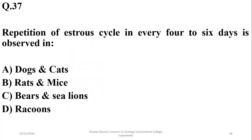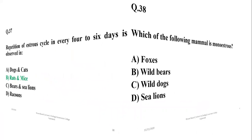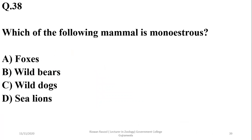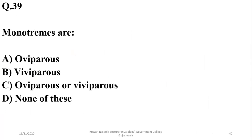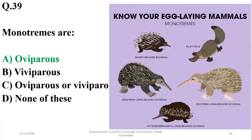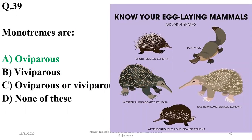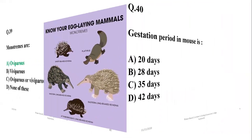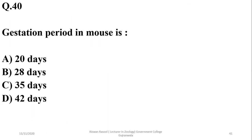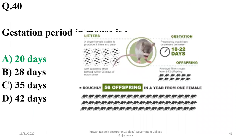Question 36: Repetition of the estrous cycle every four to six days is observed in rats and mice, while other mammals have a relatively longer estrous cycle. Question 37: Which of the following mammals is monoestrus? Among the options, foxes are monoestrus, while wild bears and wild dogs show diestrus. Question 38: Monotremes are egg-laying mammals and are known as oviparous. The right option is A. The gestation period in mice is around 18 to 22 days, so the right option is A.